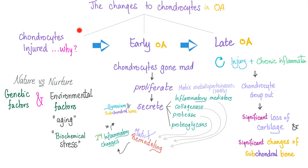The changes to chondrocytes in osteoarthritis: first, we start with chondrocyte injury, then early osteoarthritis, then late osteoarthritis. Chondrocyte injury results from genetic factors — some genes — and environmental factors: aging, biochemical stress, occupations like surgery, soccer playing, factory work, construction work, and trauma.